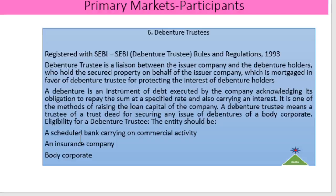The next important participant in the primary market is the debenture trustee. A debenture is an instrument of debt issued by the company acknowledging its obligation to repay the sum along with the interest — that is, it is an acknowledgement of the obligation by the company to repay the sum along with the interest in the future.